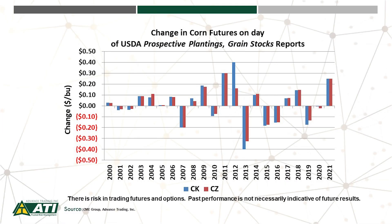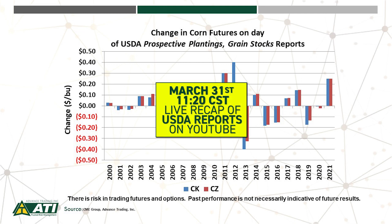We want to start out this week looking at trends in old and new crop corn futures on the date that those reports are released. This chart highlights old crop May corn futures in the blue bar and new crop December corn futures in the red bar — the change from the previous day on the date the USDA releases those two reports. There's a lot of volatility potentially on that day. Last year, for example, the market closed limit up in both old and new crop. However, look at some of those past years — we've also seen some sharp moves to the downside. The key thing is to work closely with your trusted risk management advisor to be prepared prior to the release of these reports. We're also going to have a live update next week after the release of the reports on March 31st.